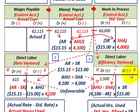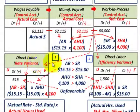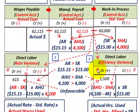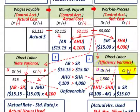Just remember, for both direct labor rate variances and direct labor efficiency variances: debits are unfavorable — that's where your actual rates or actual usage are greater than your established standard cost. Credits are favorable in both cases.